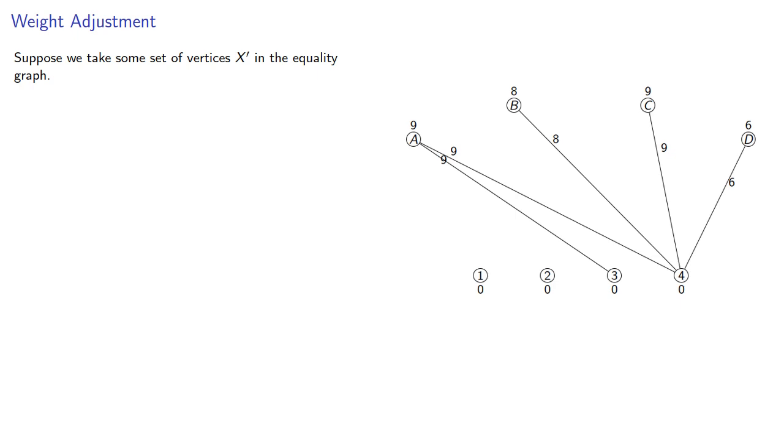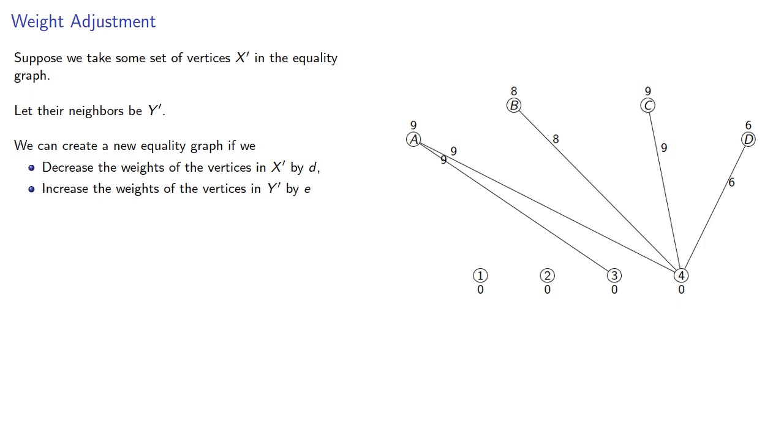Suppose we take some set of vertices x-prime in the equality graph, let their neighbors be y-prime. We can create a new equality graph if we decrease the weights of vertices in x-prime by some amount d and increase the weights of vertices in y-prime by some amount e.